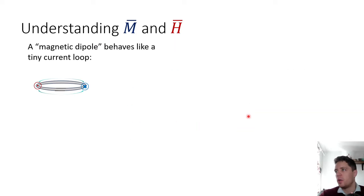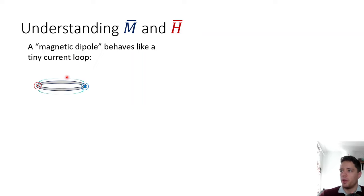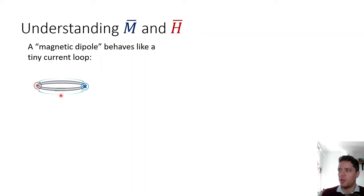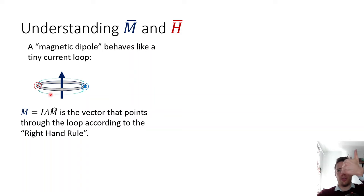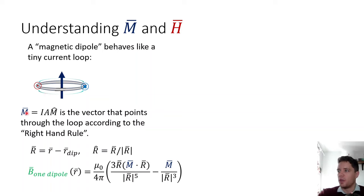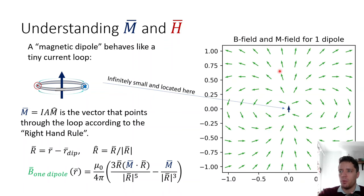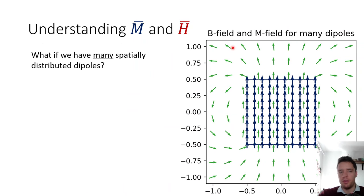Now we're ready to understand the H field and the M field. Magnetic dipoles behave like small current loops with electricity running through them. In reality, magnetic phenomena are caused by the spin of quantum mechanical particles, but for modeling the surrounding fields it's acceptable to treat them as small current loops. We define an M vector pointing through the loop with magnitude I·A (current times area), oriented by the right-hand rule. We can compute and graph the field from a single magnetic dipole, which shows a figure-8 pattern similar to the electric dipole case.